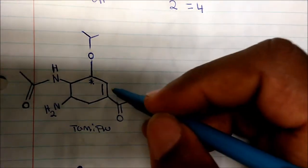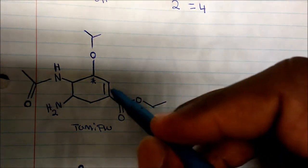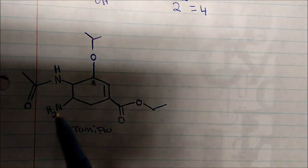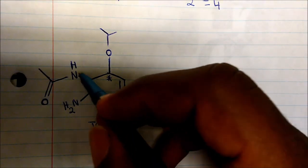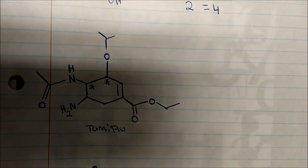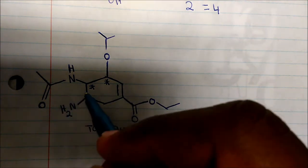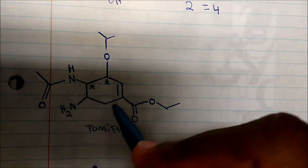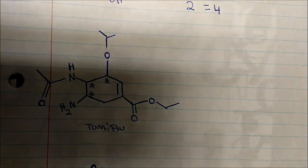We cannot have chiral centers at double bond carbons — restricted rotation means we ignore those atoms. This carbon has a whole group bonded to it, another different side, another different side, and a hydrogen — four different things, so this is a chiral center. This next carbon also has four different groups including a hydrogen, so it must be a chiral center too.